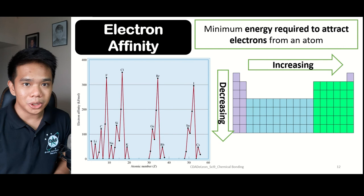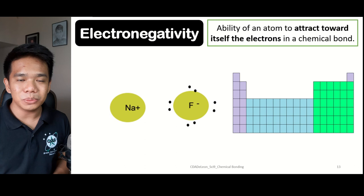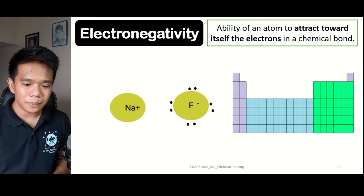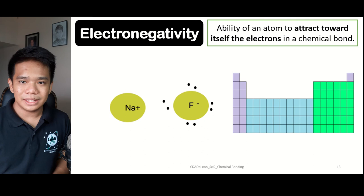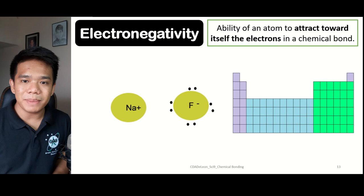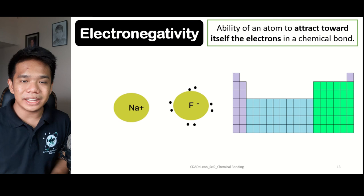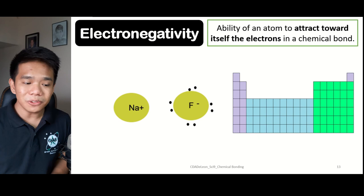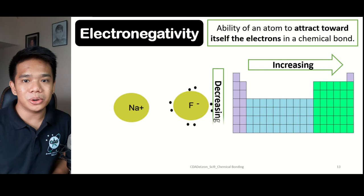Lastly, we have electronegativity, which refers to the ability of a certain atom to attract electrons during chemical bonding. Non-metals usually have higher electronegativity values than metals. Therefore, electronegativity tends to increase when we go from left to right, and it decreases when we go from top to bottom.